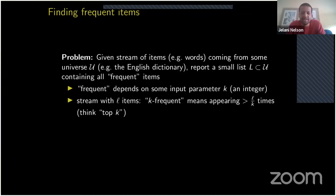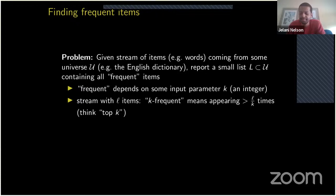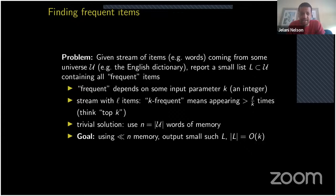The setup is: you see a stream of items coming from some universe, say words from the dictionary, and when queried you must report a small list containing all frequent items. Frequency is parametrized by some positive integer k — if the stream has length L, frequent means appearing strictly more than L/k times, i.e., more than a 1/k fraction. Think top-k. The goal is to use as little memory as possible; the trivial solution maintains a histogram using memory proportional to the dictionary size, and we want sublinear memory.